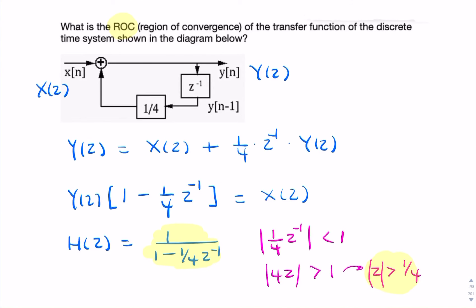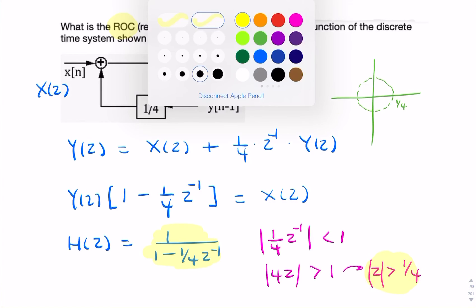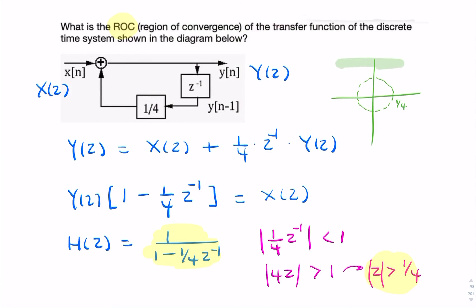So in the z-plane, that would look something like this. You'd have a circle at 1 over 4, and we're talking about everything outside this unit circle.